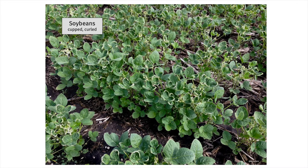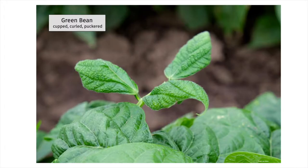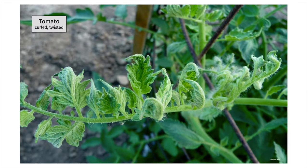Now let's look at some symptoms in crops. These are soybeans. Soybean injury from dicamba drift has received much attention, but many other crops, trees, and plants have been injured by growth regulator herbicides. This photo shows the classic curling and cupping, probably the most common symptoms observed. Here we have curling in the leaves of peach and apple trees. The leaves of these green beans are cupped, curled, and puckered. The most apparent symptoms in this tomato plant are curling and twisting of the leaves and stem.